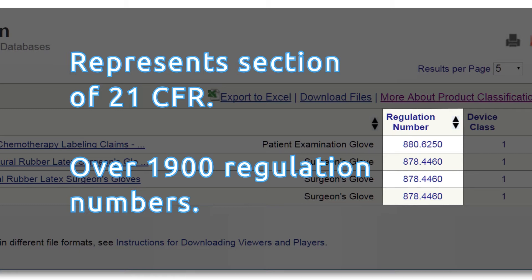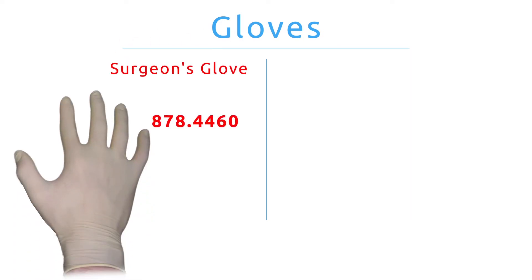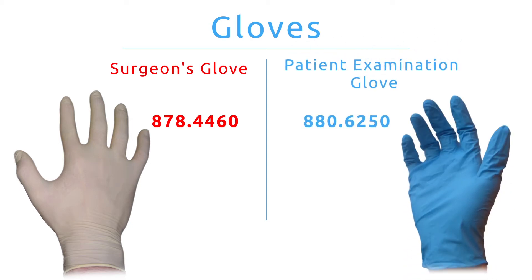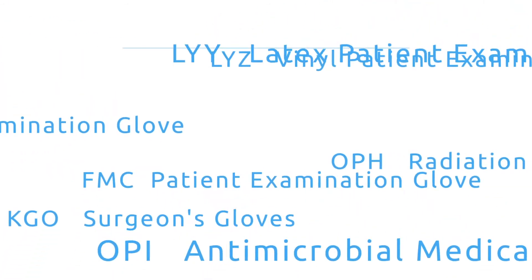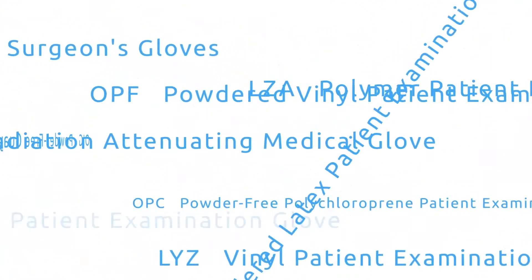Here's an example. Gloves fall under two prevailing regulation numbers: 878.4460 or 880.6250. There are close to 20 unique product codes for gloves, so you'd better choose the right one to avoid problems down the line.